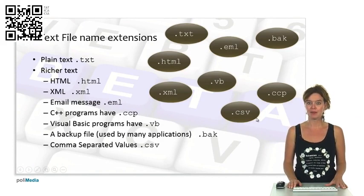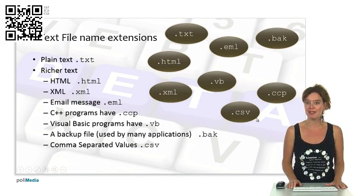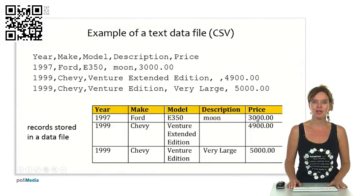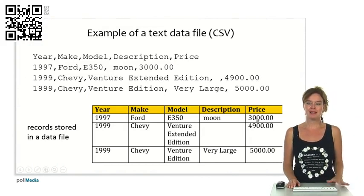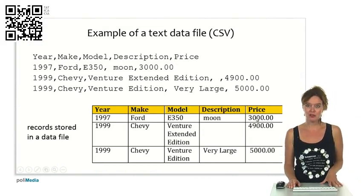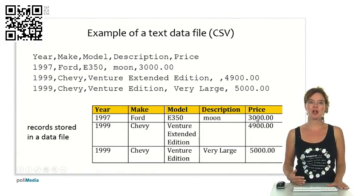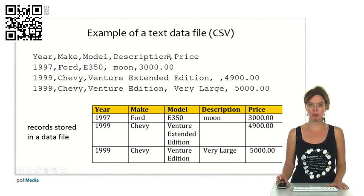Here's an example. This is a plain text file that defines the table that you see below. The values are separated by commas. Here you see the header: Year, Make, Model, Description, and Price. It's all separated by commas, and then we know that this is the first row in this table.